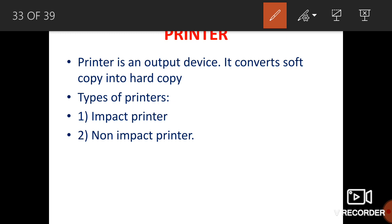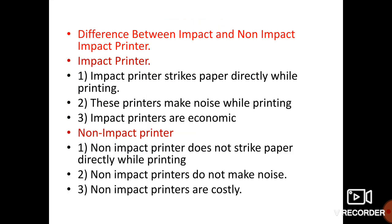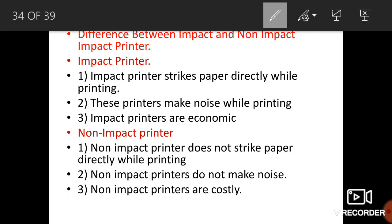Next is the printer. A printer converts soft copy into hard copy. There are two types: impact printer and non-impact printer. An impact printer directly strikes the paper, while a non-impact printer does not directly strike the paper. Impact printers create noise during printing; non-impact printers do not. Impact printers are economical; non-impact printers are more costly.